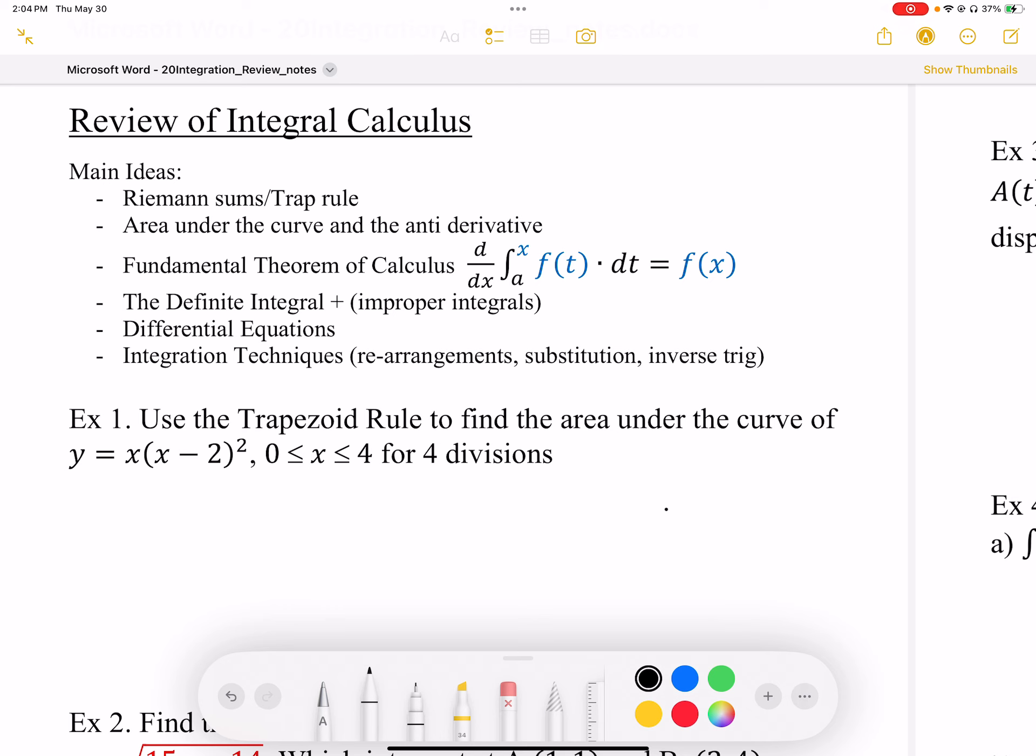We can find that area or estimate it using Riemann sums, which could be left hand or right hand, and also using the trapezoid rule.